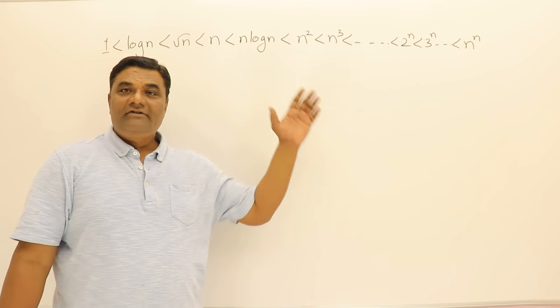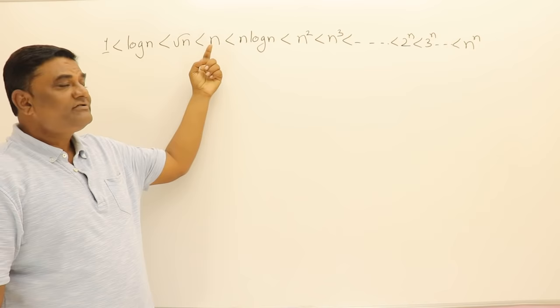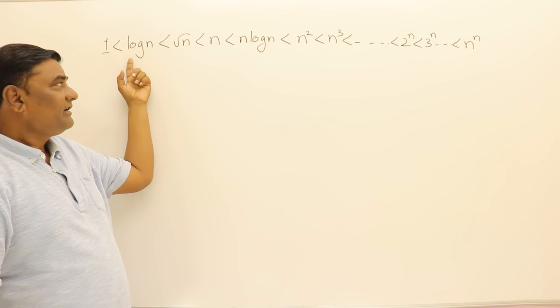Here I have written those classes of functions in the increasing order of derivatives. This means that n is always less than n log n and that is always less than n square, or log n is always less than root n as well as n. It's less than all of them.